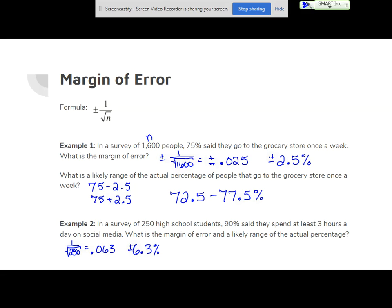So what's the difference between these two examples? The sample size. If the sample size is bigger, the margin of error is smaller. If you have a smaller sample size, there's more margin for error.